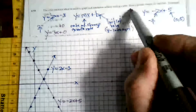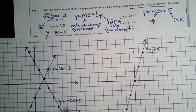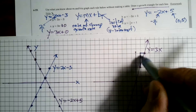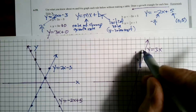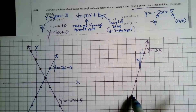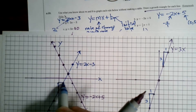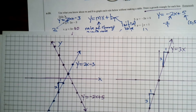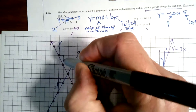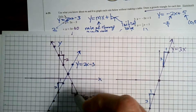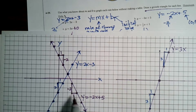I just realized the directions say to draw a growth triangle for each line. The growth triangle just points out what the slope is — you draw a triangle from one point to the next and label it. For line C it's 3 over 1. Going back to the other graph: the blue line has a growth triangle of 2 over 1, and the purple line has a growth of negative 2 over 1 — going down 2 and over 1. That's how you label your growth triangles on the line.